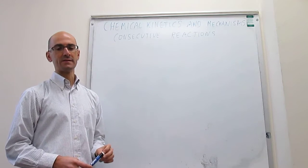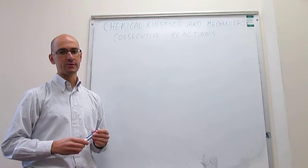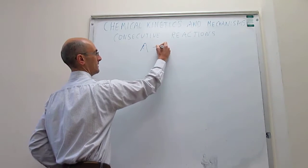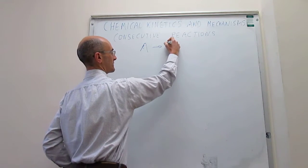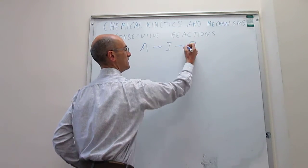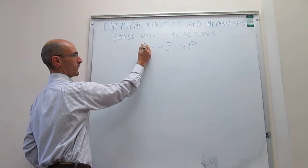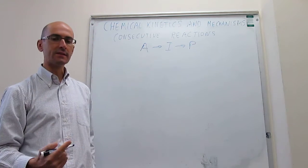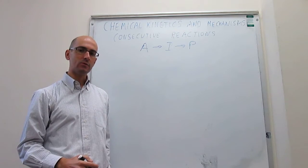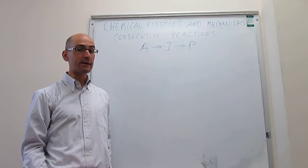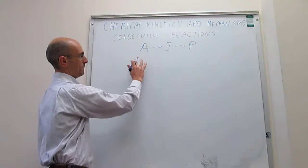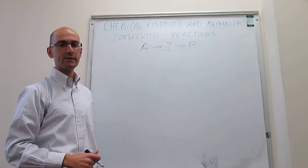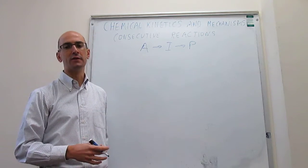In this video, we examine consecutive reactions. Consecutive reactions are those that take place in a series of steps. Our overall reaction would be reagents that go to products, but there is at least one intermediate in the reaction mechanism. The mechanism we are going to examine contains only one intermediate, and these reactions are fairly common.